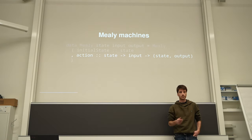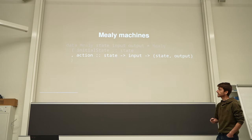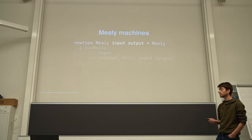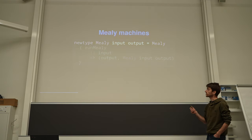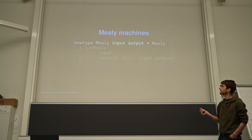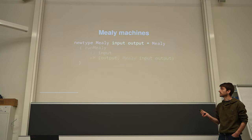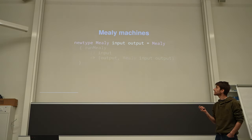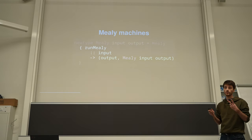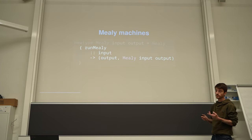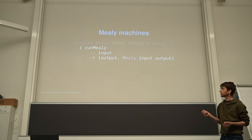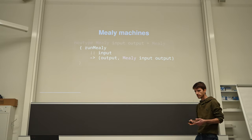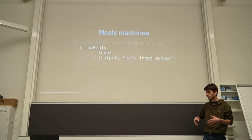If you search on Hoogle for Mealy machines, you get something slightly different from the machines library: a Mealy data type with only two type parameters — it doesn't have the state. It's a single function which takes an input and returns an output and a new machine. So basically it internalizes the handling of the state and doesn't expose the state to the user.